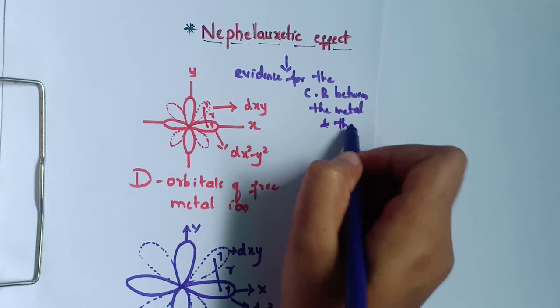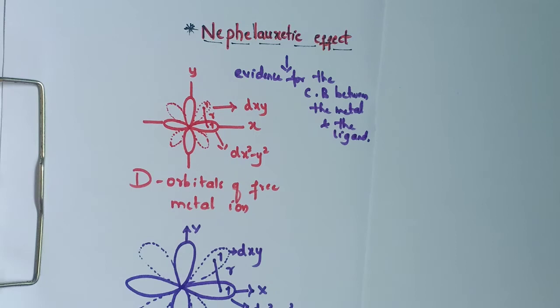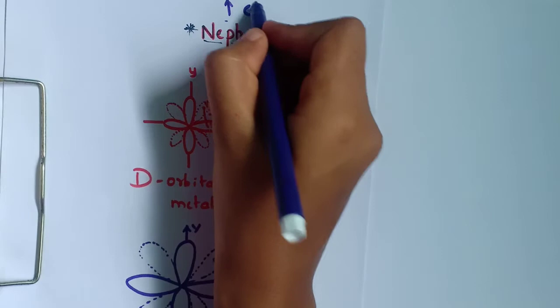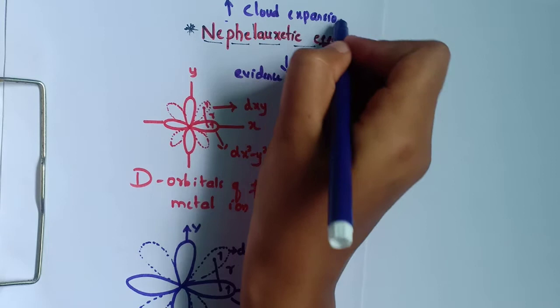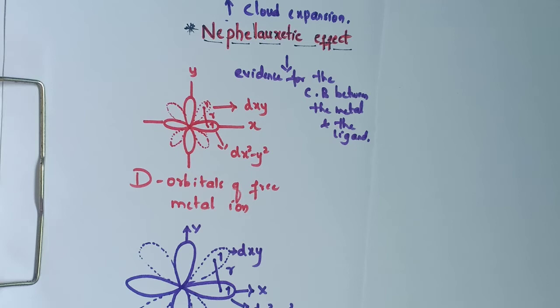The word 'nephloxetic' is a Greek word which means cloud expansion. Now let us see how it is applicable to metal-ligand bonding.